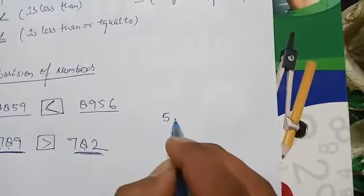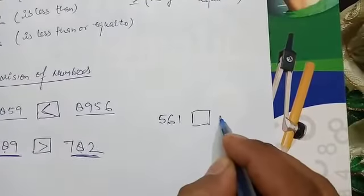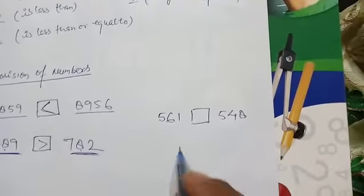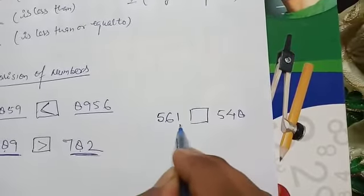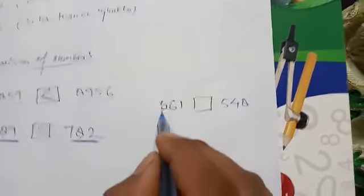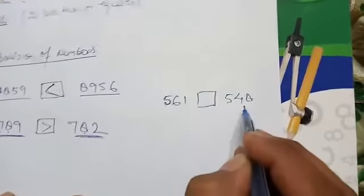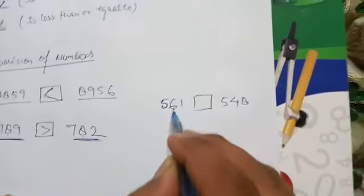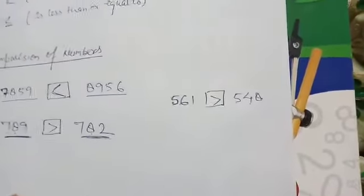Now take 561 and 548. In both numbers there are the same number of digits. We compare one by one: here is 5 and here is also 5. Here is 6, and here is 4. We know that 6 is greater than 4, so 561 is the greater number.